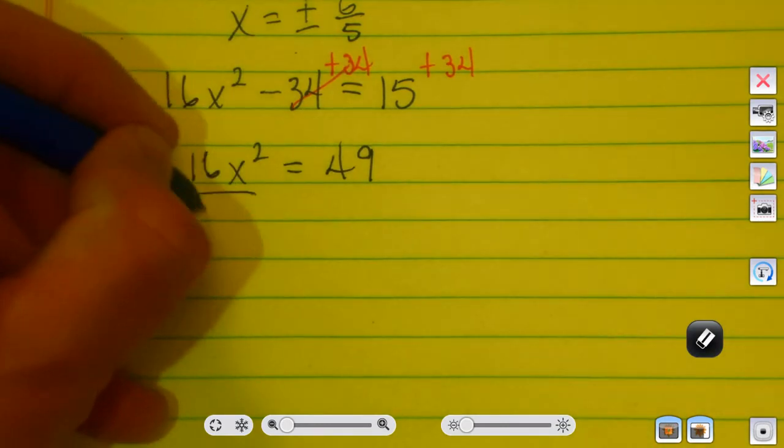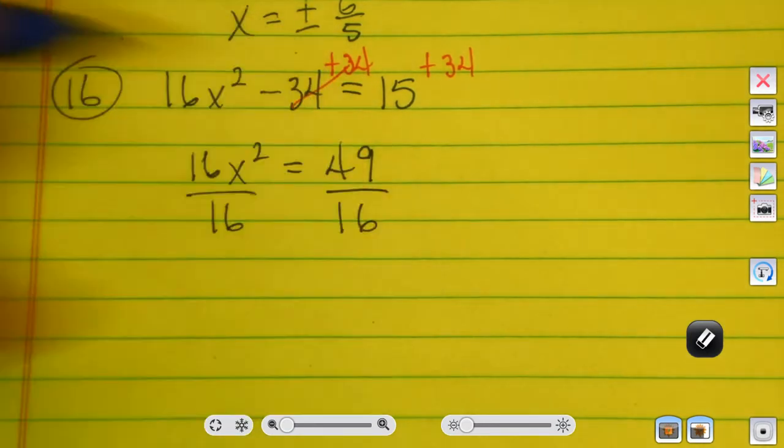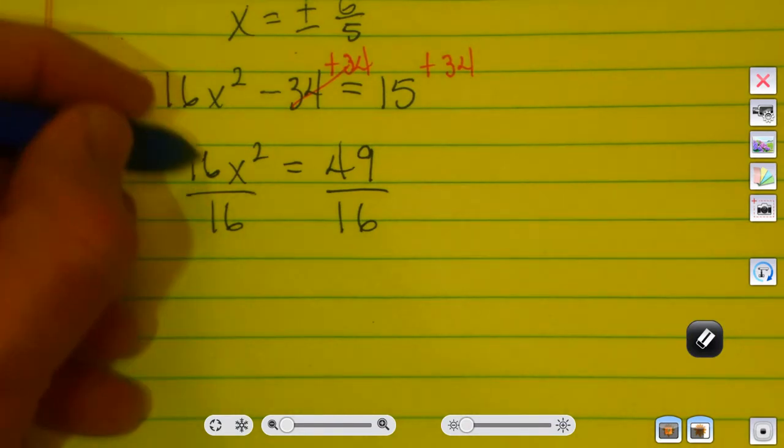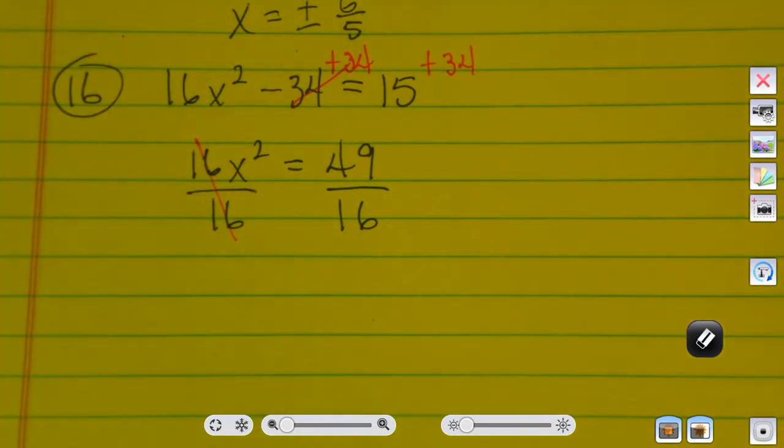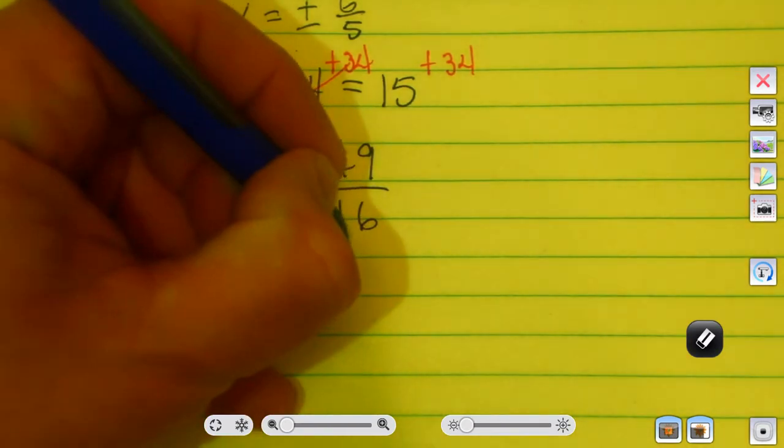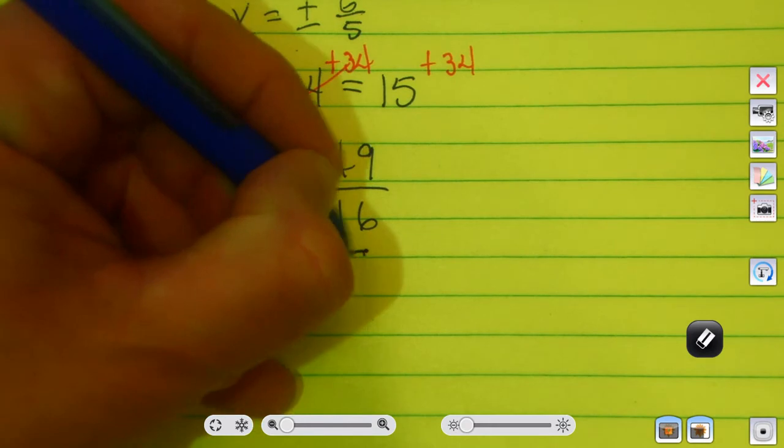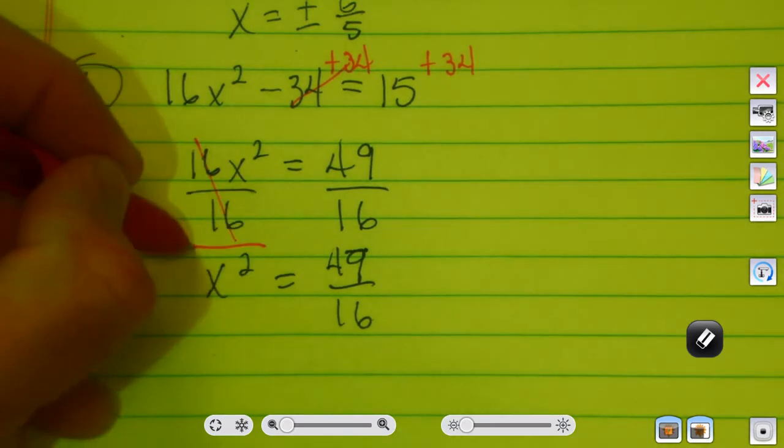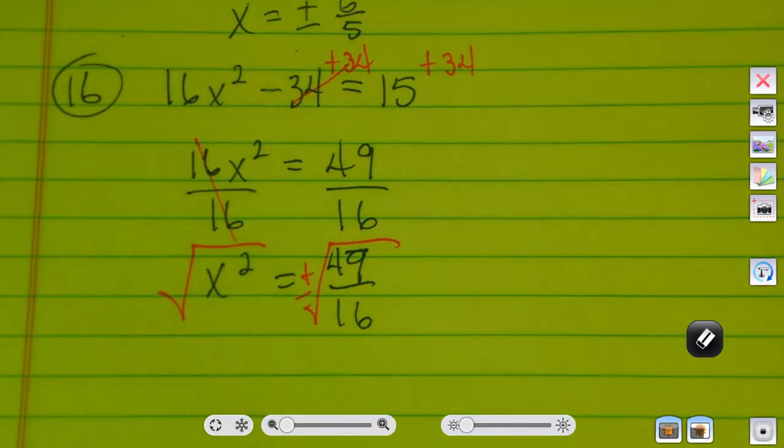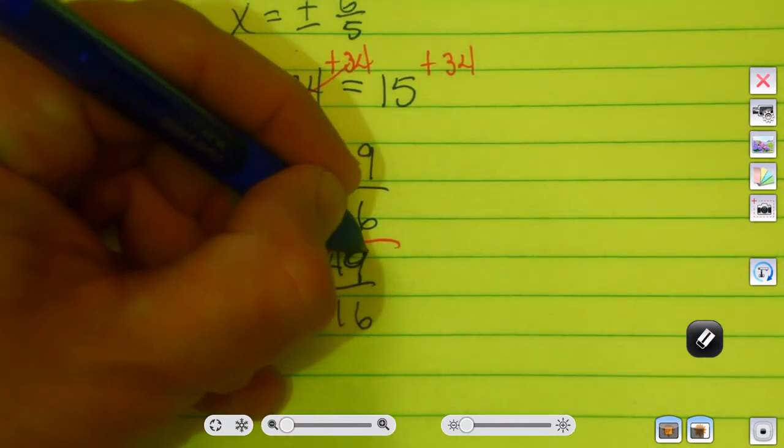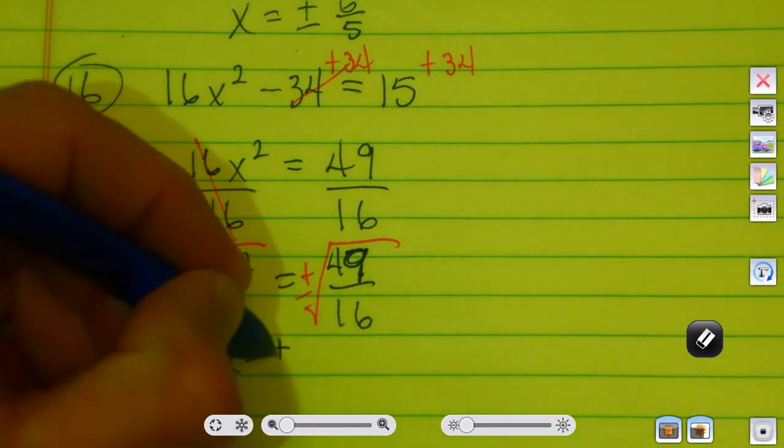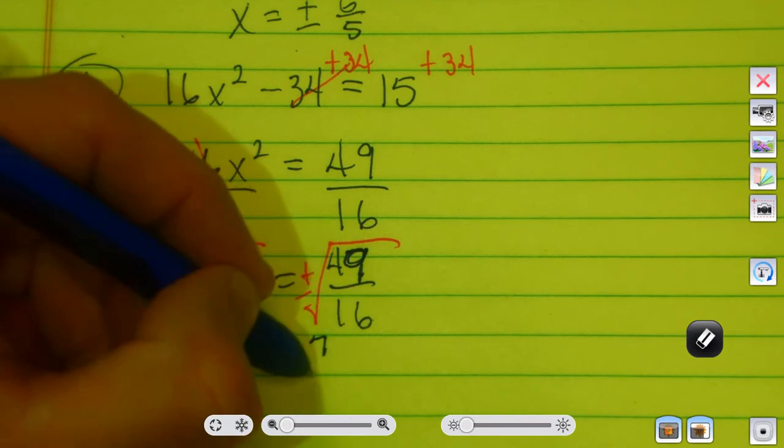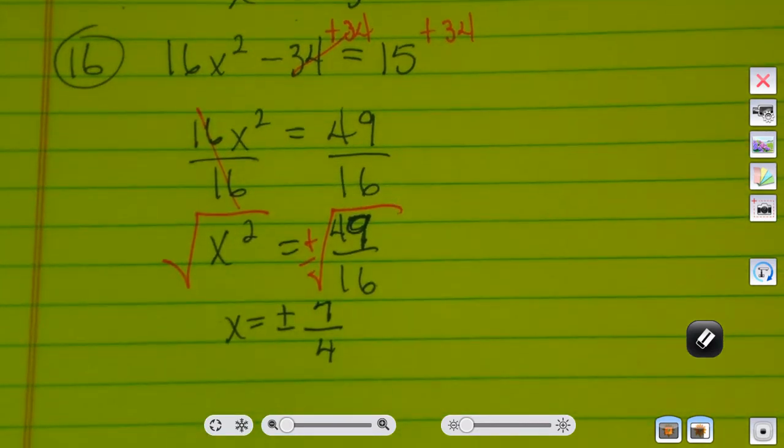Divide both sides by 16. So I'm left with x squared equals 49 over 16. We know the next step is to take the square root of both sides. The square root of 49 is 7. Square root of 16 is 4. So x equals plus or minus 7 over 4. It's okay to have a solution that's an improper fraction. I just want to leave it in that form.